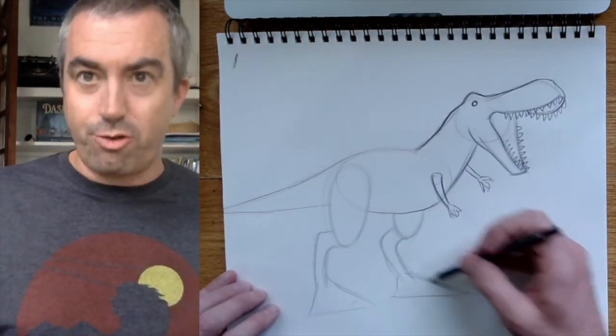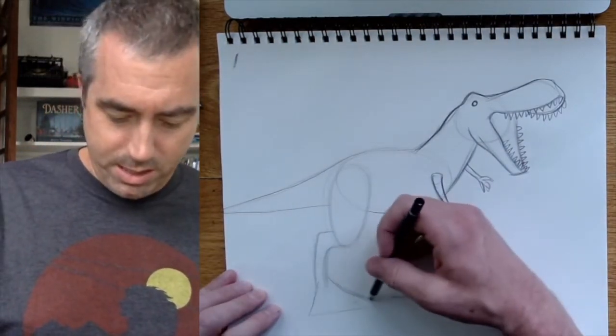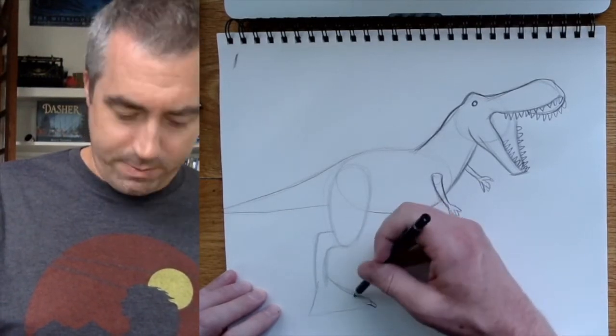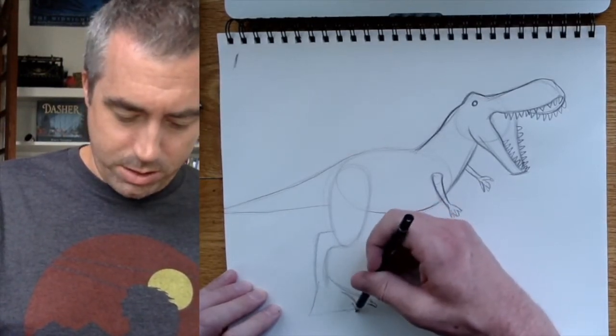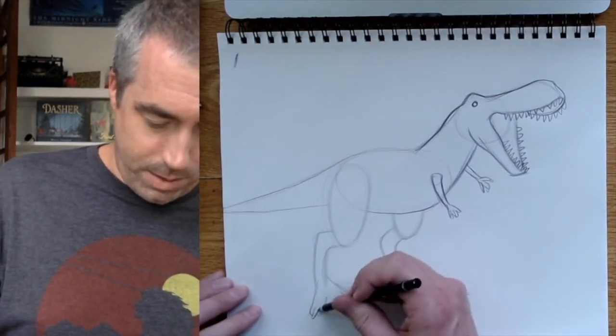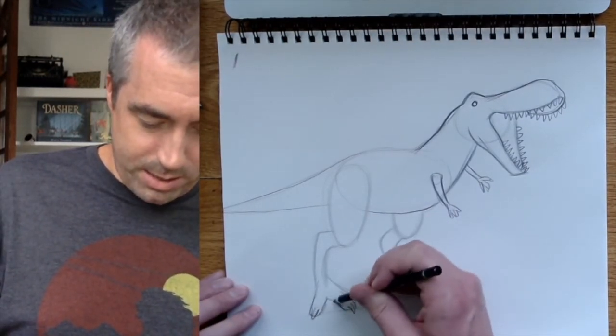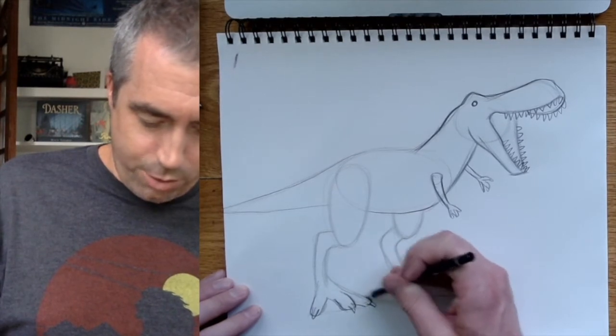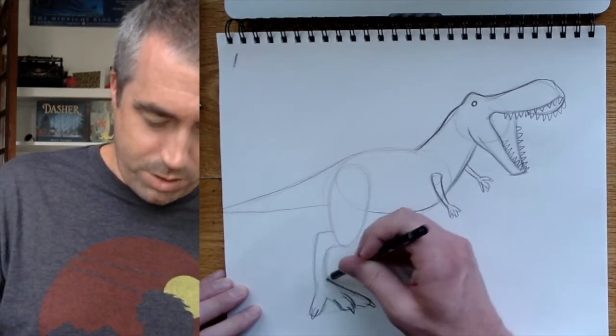All right, now let's get back to these feet. I just drew triangles, but they have these sort of talons. I don't know if that's what they're called.